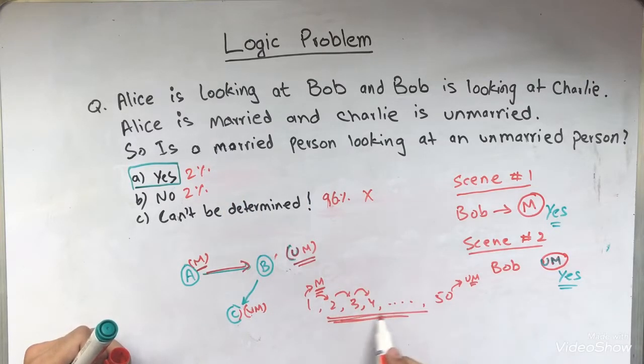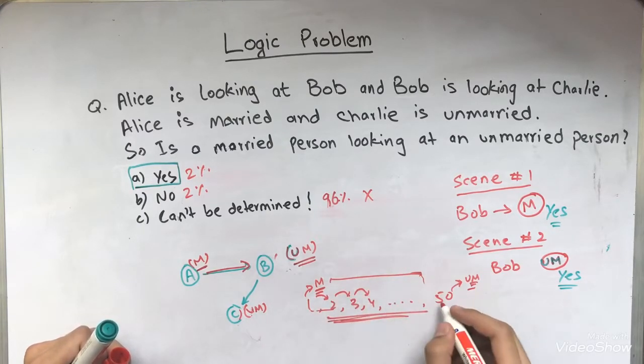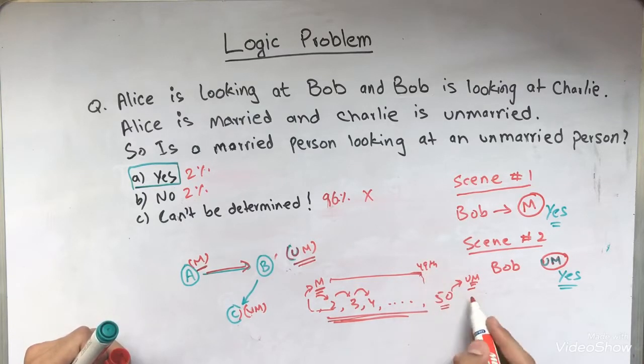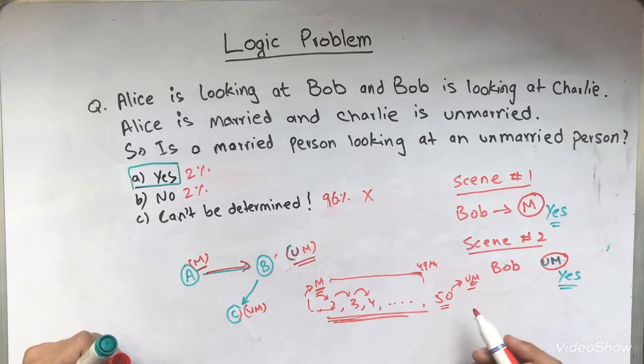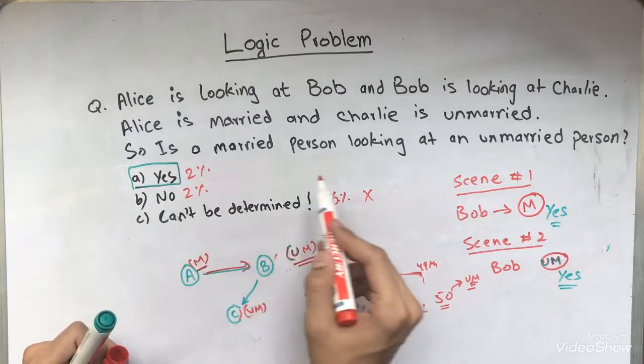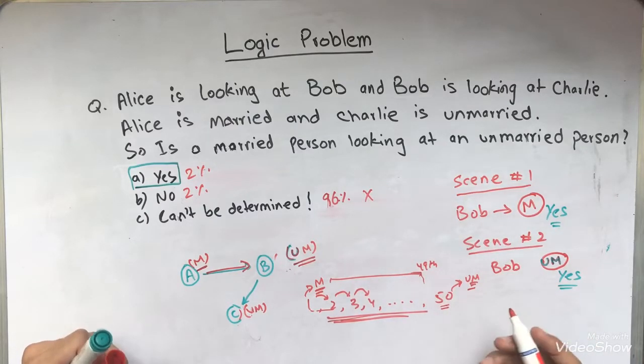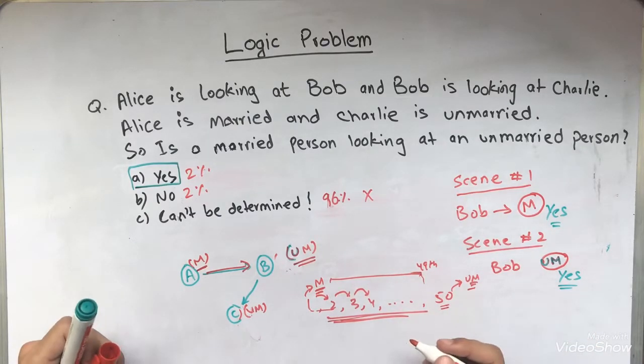However, if we consider the worst case where all of these people up to 49, because 50th is unmarried, if we consider all of them to be married so that no married person is looking at an unmarried person because all of them are married, then of course, at the end, when we come to the end, the 49th person will definitely be looking at the 50th person who is unmarried. So our situation is once again going to be yes. So it is a married person will always be looking at an unmarried person. In any case, that is going to happen for sure.